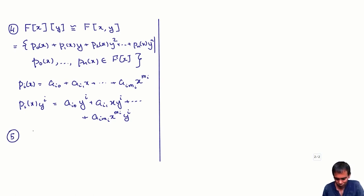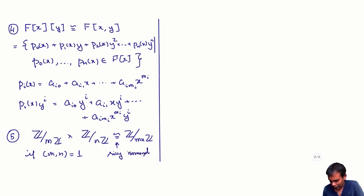Another example of a ring isomorphism would be: we have seen that Z mod MZ and Z mod NZ, if M and N are co-prime, then this is isomorphic to Z mod MNZ if M and N are co-prime. And this was the Chinese remainder theorem. But this is also a ring isomorphism.